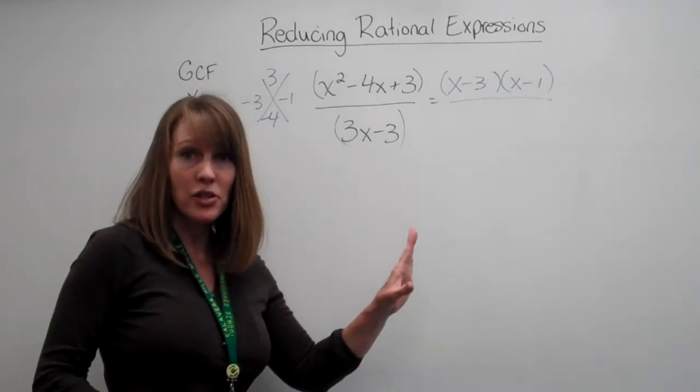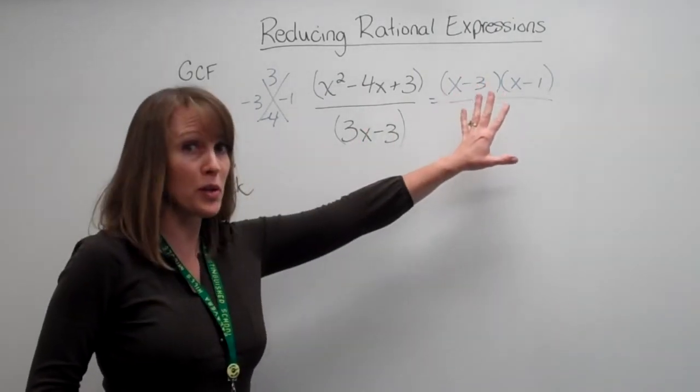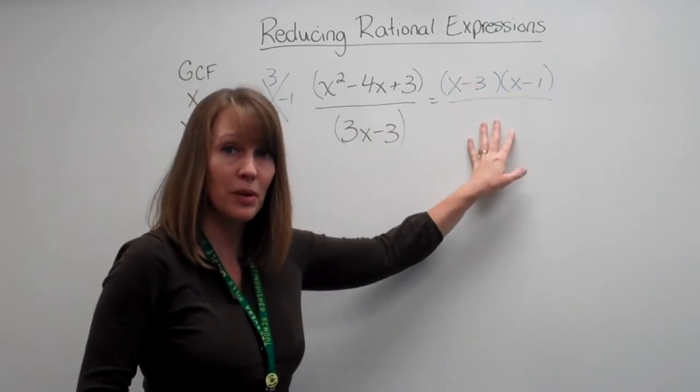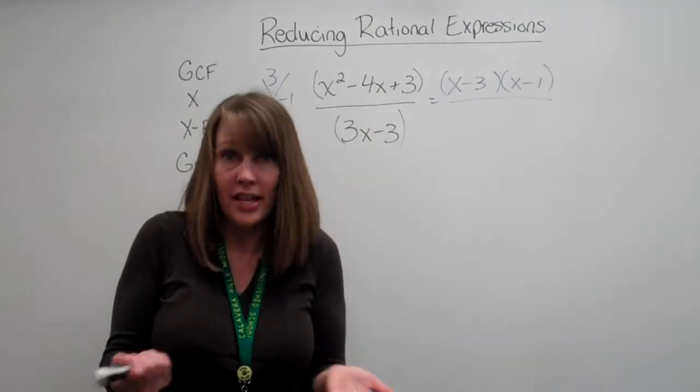Now, it's like a puzzle, right? We know, in order to reduce it, there's probably going to be either an x minus one or an x minus three down here. So we can cross it off. That's the whole point.